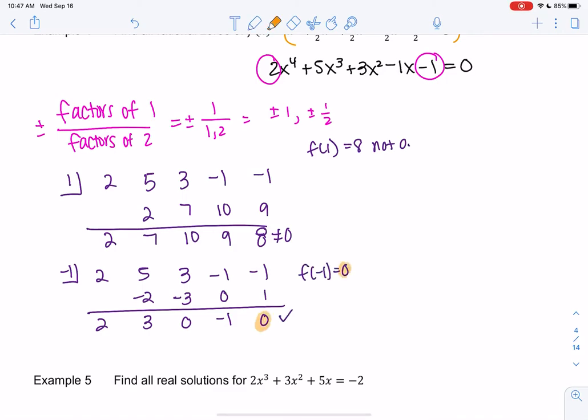Right? Remember that remainder theorem a while ago. So now we have x minus negative 1, and then we'll have 2x^3 because we start with x^4, so this is 1 degree less, plus 3x^2 plus 0x - 1. And now I'll just kind of guess and check with 1/2 and negative 1/2. You could also try negative 1 again.